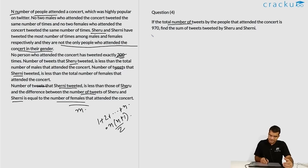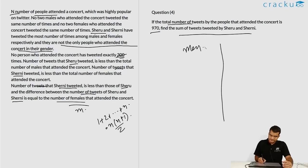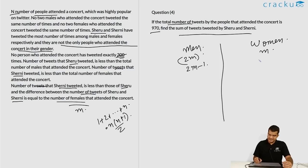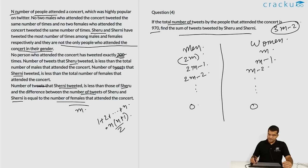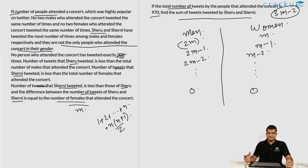If the total number of tweets by all people is 970, find the sum of tweets by Sheru and Sherni. Sheru tweeted 2m − 1 and Sherni tweeted m − 1, so we need 3m − 2. The total tweets by men is 1 + 2 + … + (2m−1) = (2m−1)(2m)/2, and the total tweets by women is 1 + 2 + … + (m−1) = (m−1)(m)/2. We set their sum equal to 970 and solve for m.